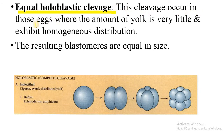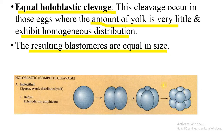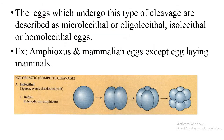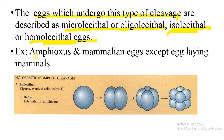Equal holoblastic cleavage occurs in eggs where the amount of yolk is very little and exhibits homogeneous distribution — yolk is evenly distributed throughout the egg. The resulting blastomeres are all of equal size. The eggs undergoing this type of cleavage are microlecithal or oligolecithal and isolecithal or homolecithal. Examples are amphioxus and mammalian eggs, except egg-laying mammals.